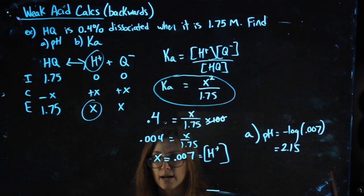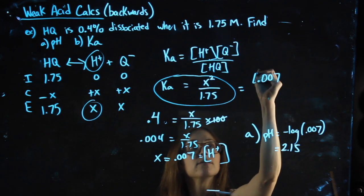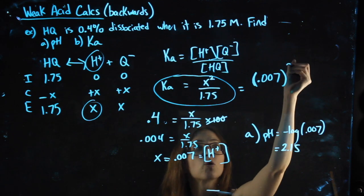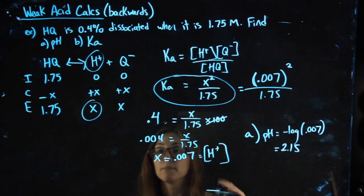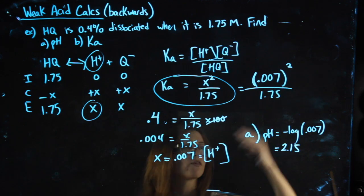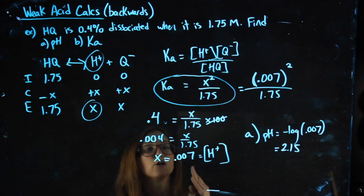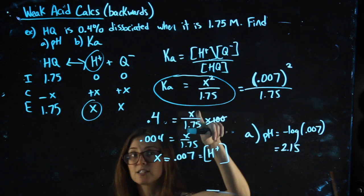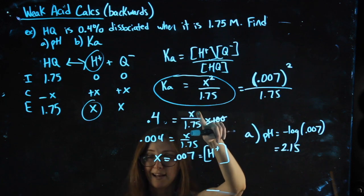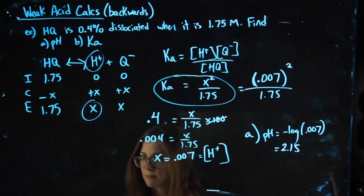Earlier, just on autopilot, I wrote this expression for KA. I now have an X value that I can plug in. My KA is going to be that X value squared over 1.75. People get on autopilot here and they'll either forget to square this or they'll multiply it by 100. You'll see as you do these problems, there are a lot of patterns, but don't fall into those mistakes. Know that the percent dissociation doesn't have a square in it, because why would it? It doesn't make any sense. And the KA doesn't have a times 100 in it, because why would it? That doesn't make any sense.